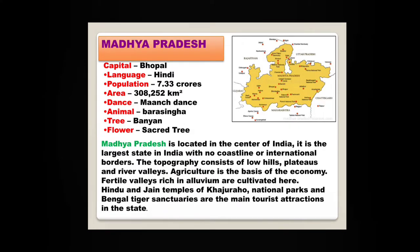Madhya Pradesh — capital Bhopal. Madhya Pradesh is located in the center of India. It is the largest state in India with no coastline or international borders. The topography consists of low hills, plateaus and river valleys. Agriculture is the basis of the economy. Fertile valleys rich in alluvium are cultivated here. Hindu and Jain temples of Khajuraho, national parks and Bengal tiger sanctuaries are the main tourist attractions.